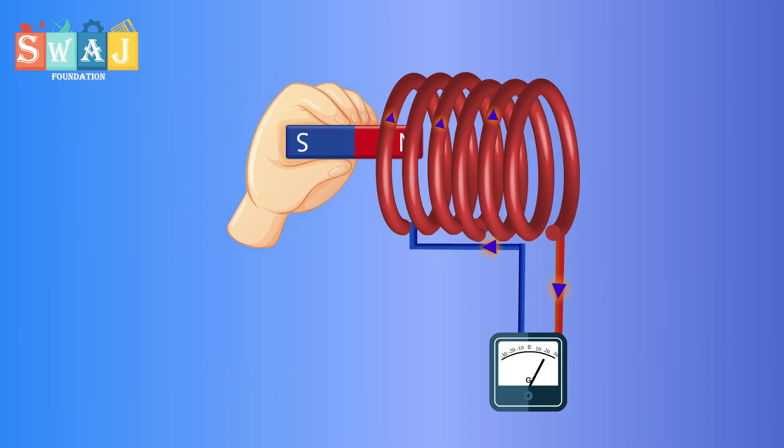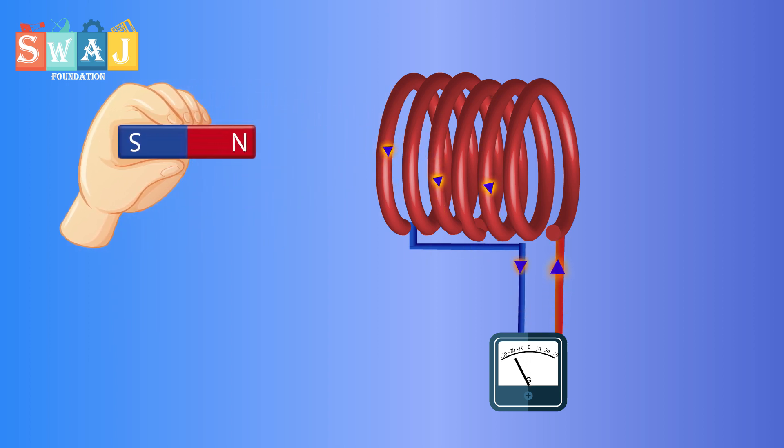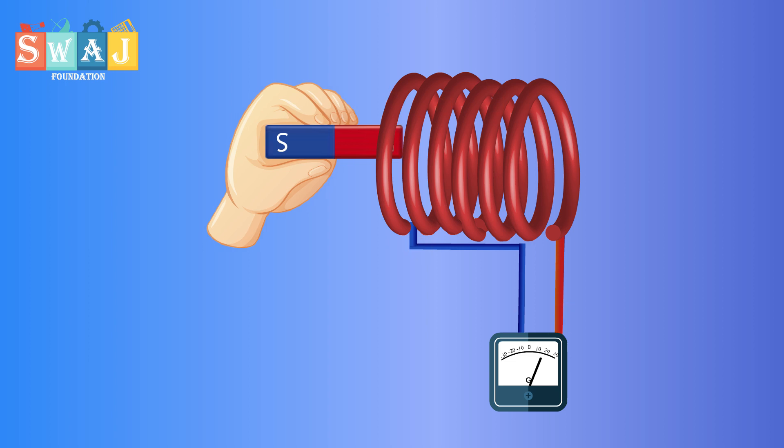If there is a coil of N loops instead of a single loop, then induced EMF e equals minus N del phi over del t.